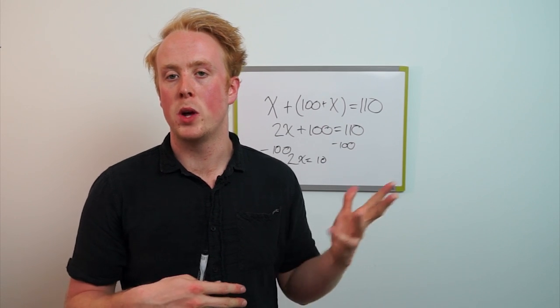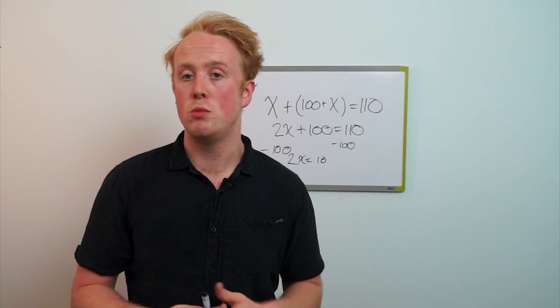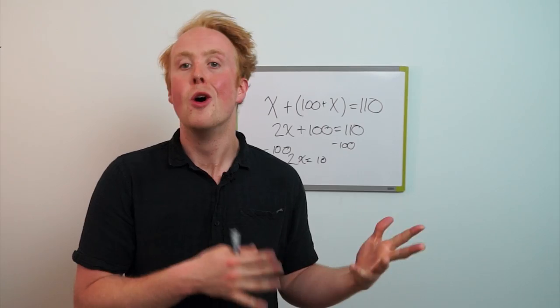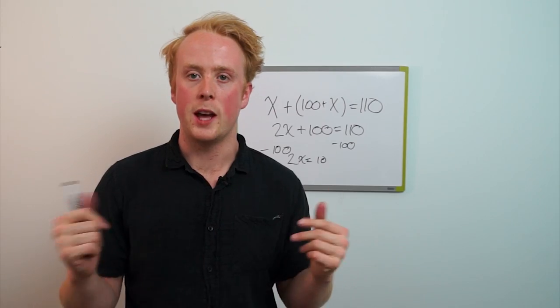Because we had two x plus one hundred is equal to one ten. If we subtract one hundred from both sides of the equation we wind up with two x is equal to ten, because one ten, one dollar and ten cents minus one hundred is simply ten cents or ten.